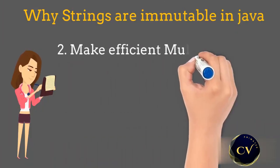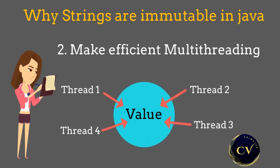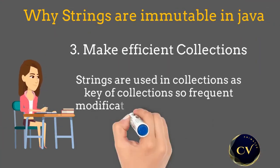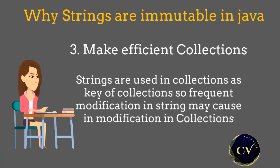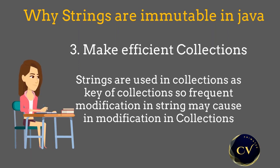The second reason is Java uses multithreading. If multiple threads are accessing the string and trying to modify its value at the same time, it will create serious security issues. So immutable strings make multithreading more efficient in Java. The third reason is that strings are used in many collections as a key. So if we keep modifying the string, our collection will also get affected. So for efficient collection implementation, Java developers decided to make strings immutable.